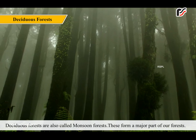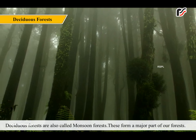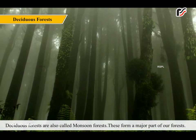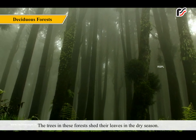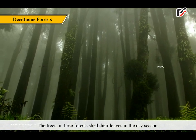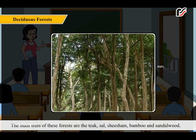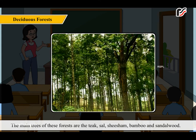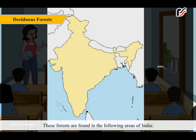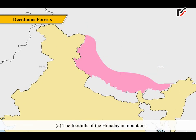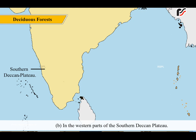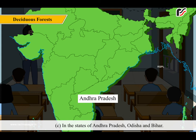Deciduous forests are also called monsoon forests. These form a major part of our forests. The trees in these forests shed their leaves in the dry season. The main trees are teak, sal, shisham, bamboo and sandalwood. These forests are found in: a. The foothills of the Himalayan mountains, b. The western parts of the southern Deccan plateau, and c. In the states of Andhra Pradesh, Odisha and Bihar.